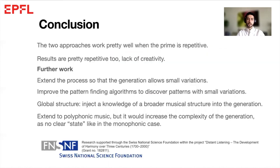So in conclusion, we see that the two approaches work fairly well when the prime is somewhat repetitive, but can struggle otherwise. Generations are also pretty repetitive since only patterns found in the prime are repeated. It certainly lacks novelty, but further work could extend this to allow the program to make small changes in the found patterns, or to be able to find repetitions with small variations. Also, the model could add variations during the generation. Future work could also use the global structure of the prime, like chord progression or the key. For example, we have shown the process for monophonic pieces, but it could also be extended to polyphonic music. However, this would significantly increase the complexity of the generation, as there wouldn't be any clear state as we had in the monophonic case. Thank you for your attention.